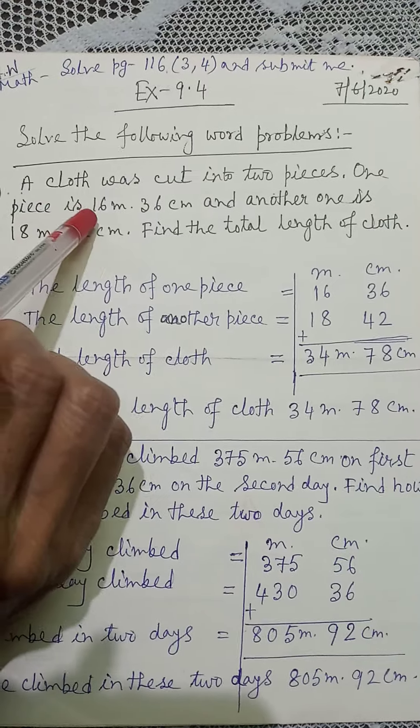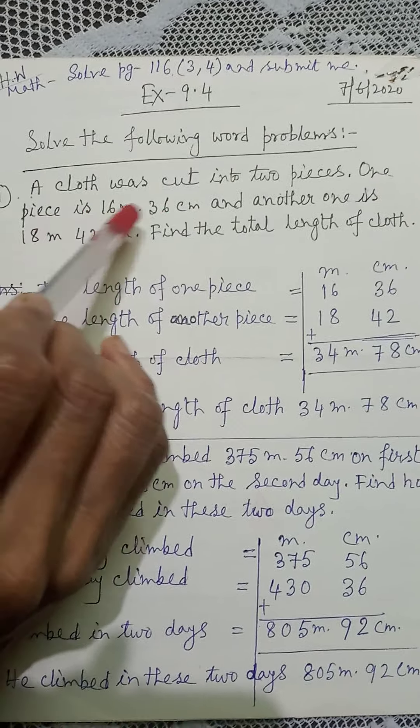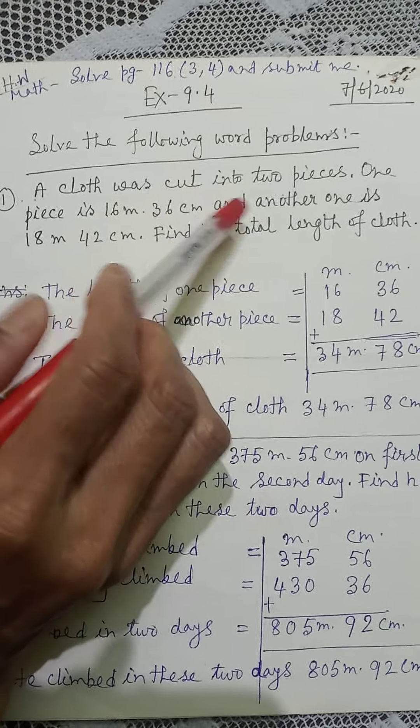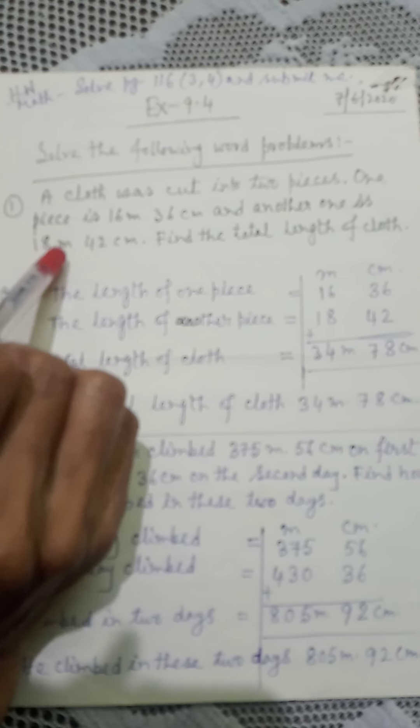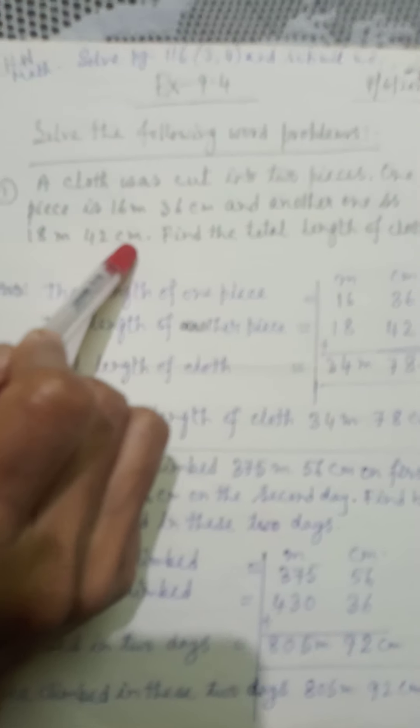One piece is 16 m 36 cm and another one is 18 m 42 cm.